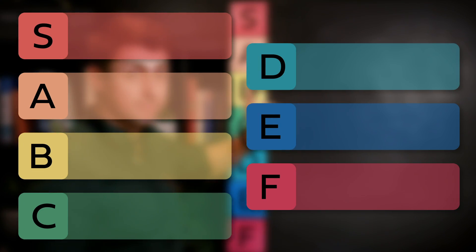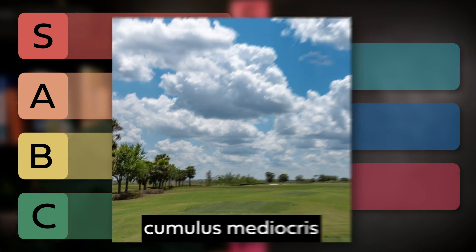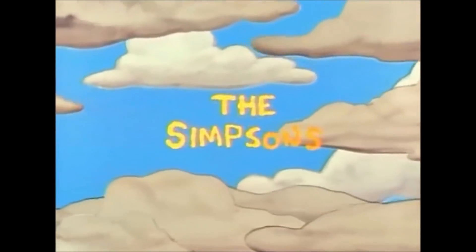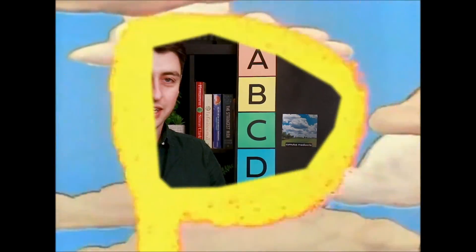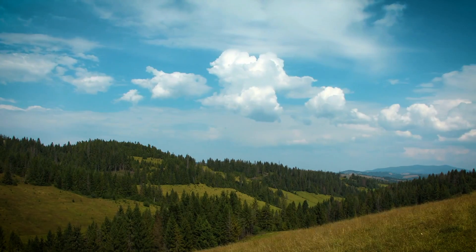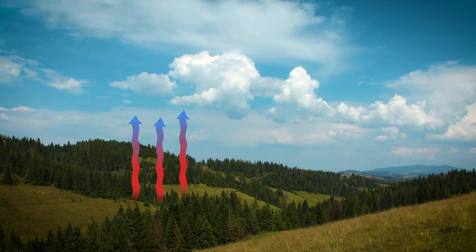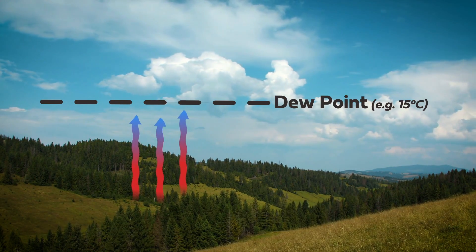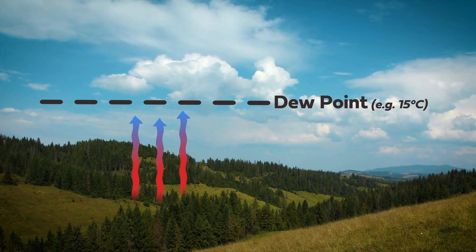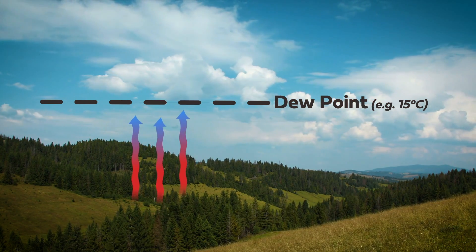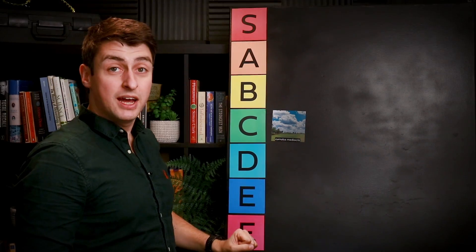To begin with, we need a reference — what goes in the middle of the board in C tier? I think... Cumulus Mediocris. The clue's in the name. This is a cloud. If you ask someone to draw a cloud, they're going to draw you one of these. They form when warm air near the surface rises, expands and cools down. Eventually it might cool to its dew point, where water vapor condenses out and forms water droplets, forming a cloud.